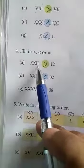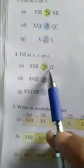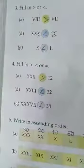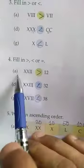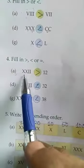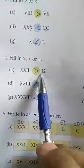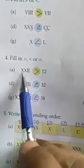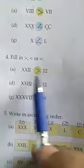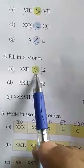Now we will move to question number 4. Question number 4 is XXII and 12. We will compare these numbers same as question number 3. So now we will do question number A of question 4. We will compare XXII and 12. We can see that XXII is 22 and this is 12. So 22 is greater than 12, so this sign will come.